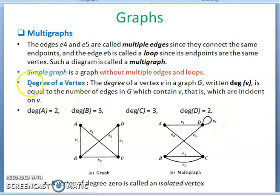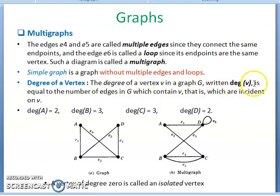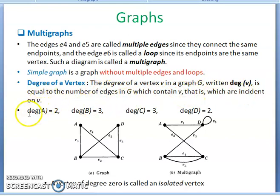One more terminology is degree of a vertex. For each and every vertex, you calculate the degree. The degree of vertex V in a graph G, written as deg(V), is equal to the number of edges in G which contain V — that is, which are incident on V.